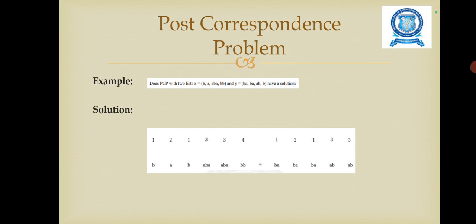First we are going to give some numbers for the given set of strings X and Y. On the left hand side you write 1, 2, 1, 3, 3, 4. The 1 represents b, 2 represents a, 3 represents ab, again 3 represents aba, 4 represents bb.